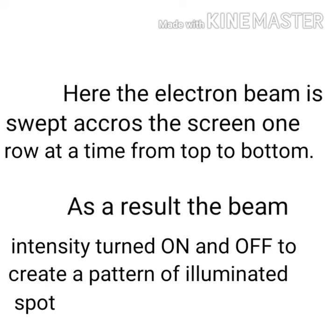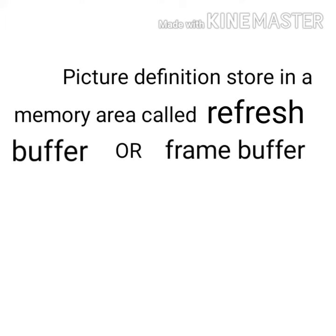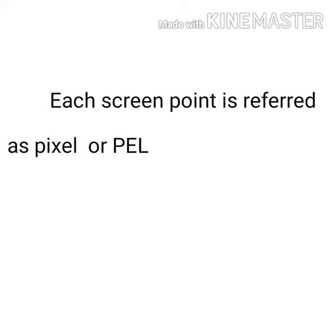The beam intensity is turned on and off to create a pattern of illuminated spots. Here we use a memory space known as refresh buffer or frame buffer. Picture definitions are stored in this memory area, and the stored intensity values are retrieved from this memory area and painted on the screen one row at a time.